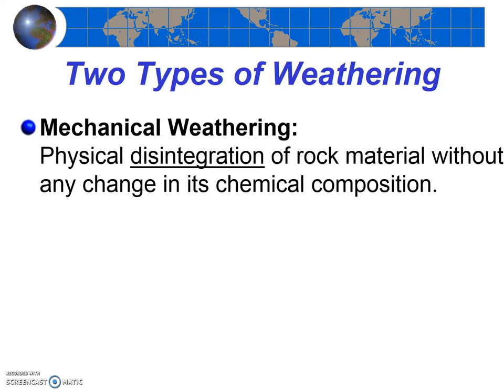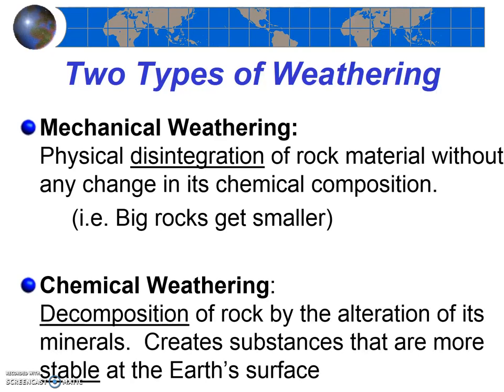Mechanical weathering is the physical disintegration of rock material without any change in the rock's chemical composition — essentially big rocks are broken down into smaller pieces. Chemical weathering, on the other hand, is a decomposition of rock by the alteration or changing of the rock's minerals. Basically, substances that are not stable on the earth's surface are being transformed into substances that are more stable on the earth's surface.